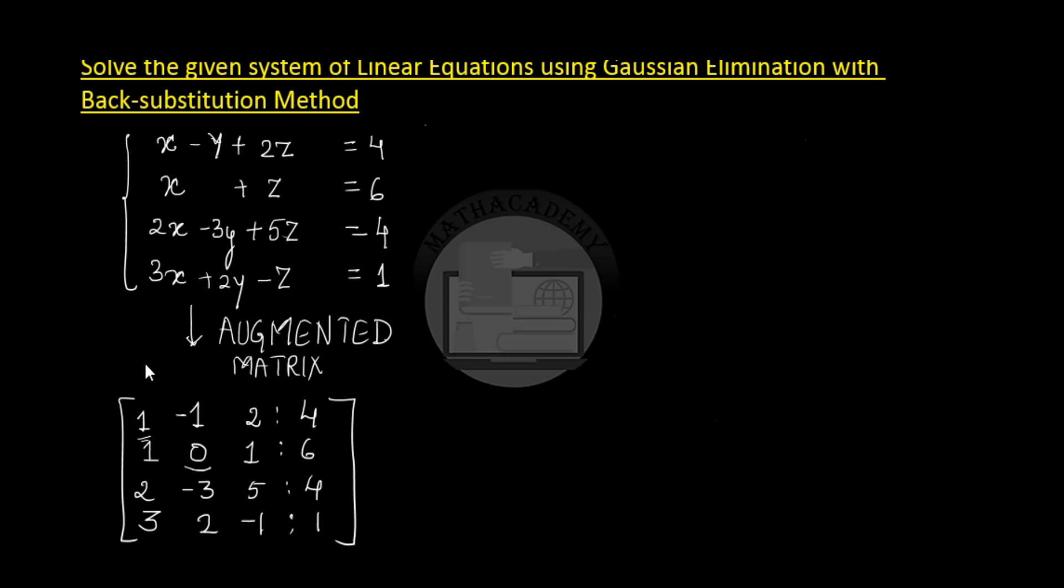Now if we have to solve it using Gaussian elimination, the first thing is to convert this augmented matrix to the row echelon form. In the row echelon form, we know that each row begins with a 1 as the first non-zero element. If we look at this matrix, the first element of row 1 is 1, so we don't have to do anything to row 1.